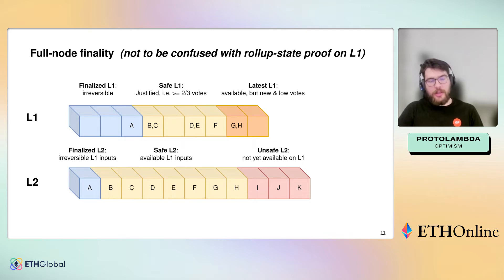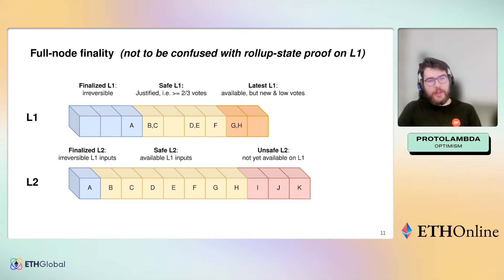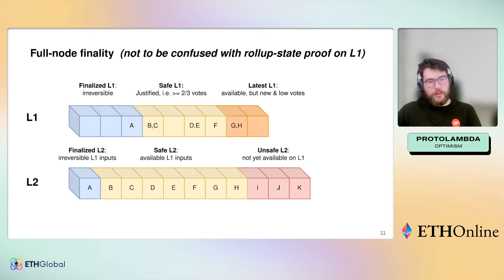I often see confusion about proof of stake finalization versus rollup finalization. Before proof of stake, we used 'finalized' for layer two data that is proven on layer one, but now that we have proof of stake we also have this notion of finalized data on layer one. If you think about a rollup as a function that consumes inputs, the function is not going to revert if the inputs are not going to revert. So when the inputs are confirmed on layer one, the layer two can also be finalized - but it will take more time for the layer two to be secured on layer one for withdrawals. We're focusing here on finalization of data, because we're talking about data availability.